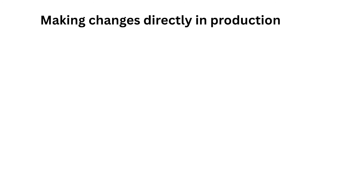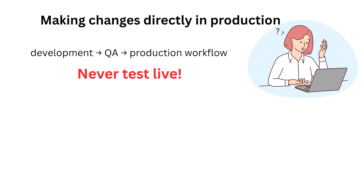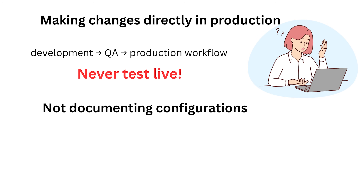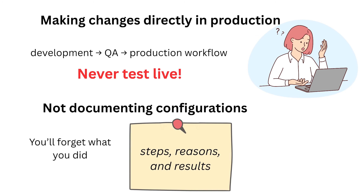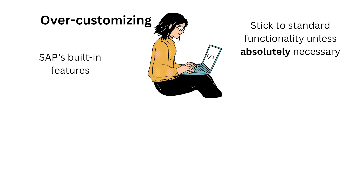Mistake 5: Making changes directly in production. This is a huge mistake. Always use the development-to-QA-to-production workflow. Never test live. Mistake 6: Not documenting configurations. You'll forget what you did — always note your steps, reasons, and results; it'll save you and your team hours later. Mistake 7: Over-customizing. Beginners often jump to coding instead of exploring SAP's built-in features. Stick to standard functionality unless absolutely necessary.